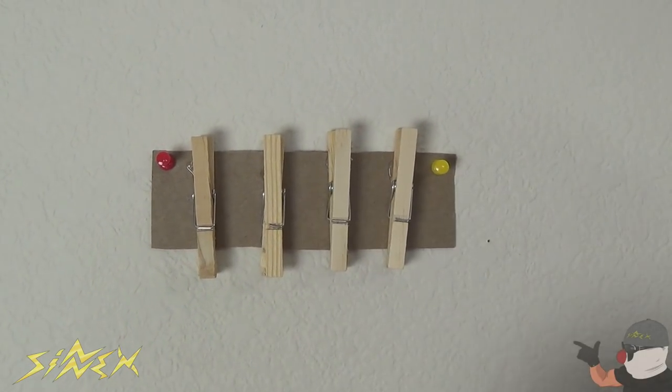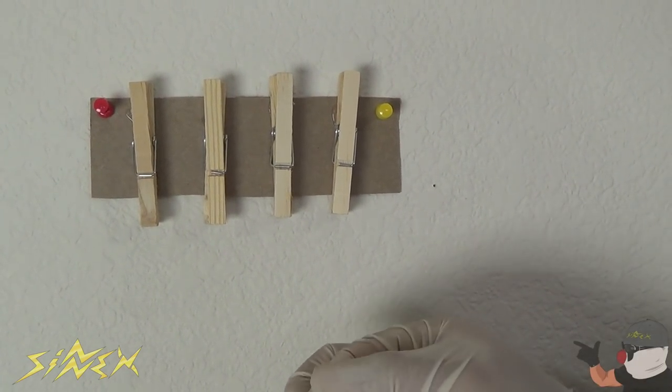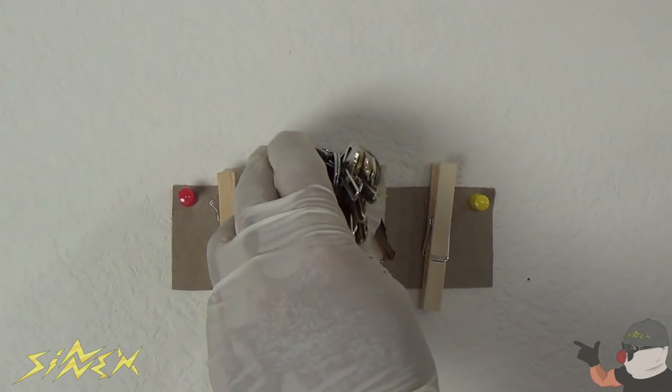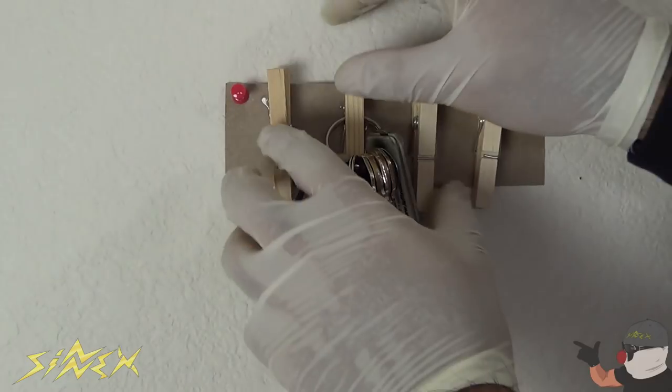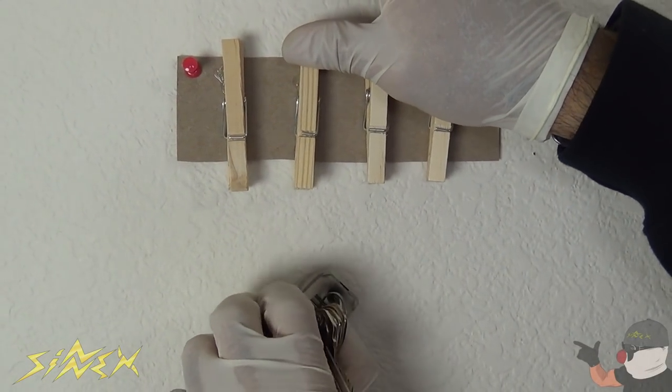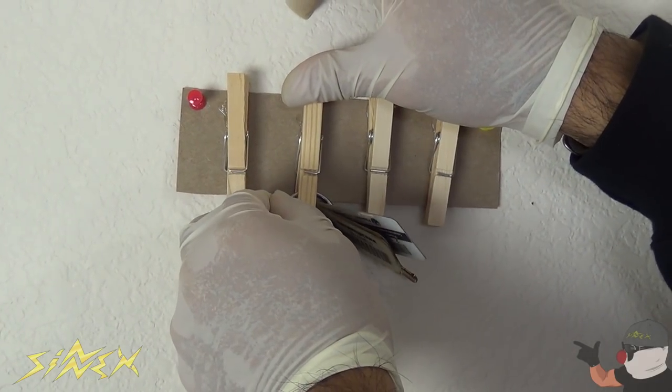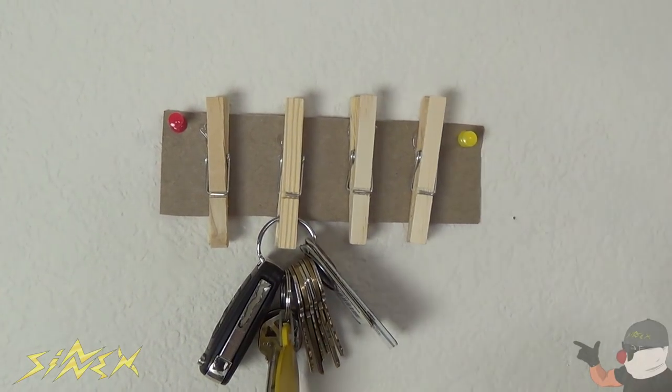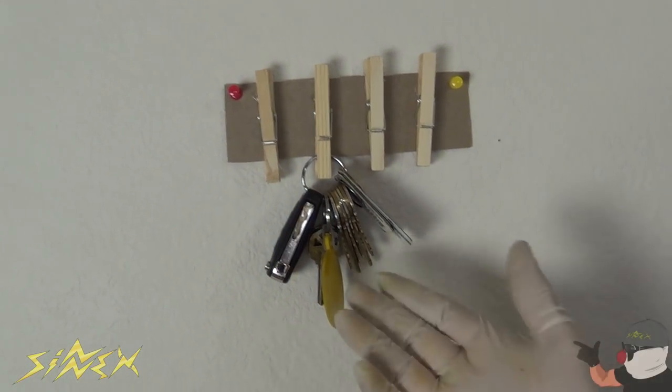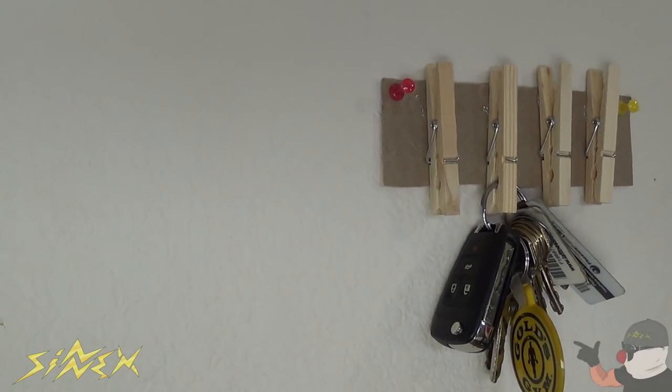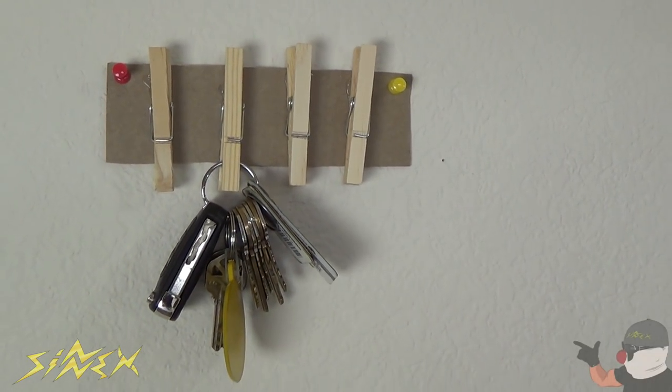I have my keys right here. There are two ways to hang your keys. You can either do it on the top like this, or you can clip them on. Just put it through the clothespin and close it up. That's a cool way to keep your keys organized, or anything else you wish to hang up on this wall.